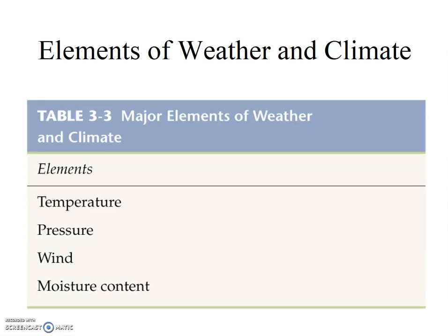A few weeks ago, we introduced the four elements of weather and climate. You should be able to recite them easily: temperature, pressure, wind, and moisture. Last lesson we covered temperature, and this week's lesson addresses two additional elements, pressure and wind.